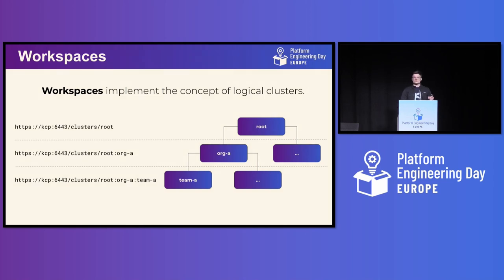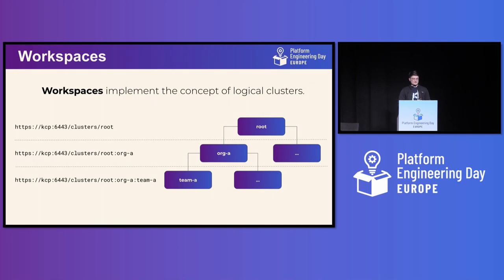These workspaces act as independent Kubernetes APIs to the outside, and for that I've written down some URLs here. So depending on the workspace that you want to talk to, you pass a different URL. If you want to talk to the root workspace — which is the start of your workspace tree — you append this cluster path with 'root' as a name and build upon that. So depending on which workspace you talk to, you get a different Kubernetes API, different discovery APIs, and the resource types that you can use will be different.